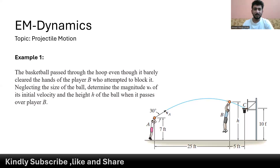In this problem, a basketball passes through the hoop even though it barely cleared the hands of player B, who attempted to block it. Neglecting the size of the ball, we have to find the magnitude of its initial velocity and the height h of the ball when it passes over player B.